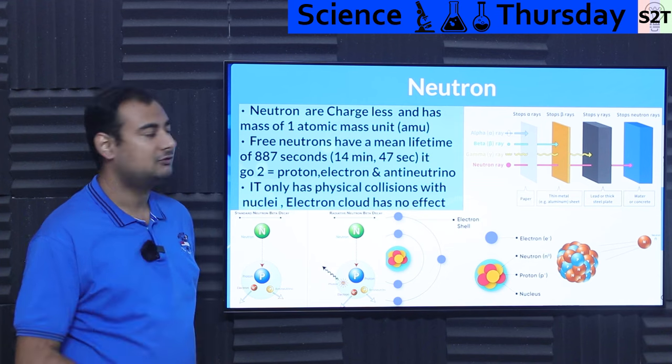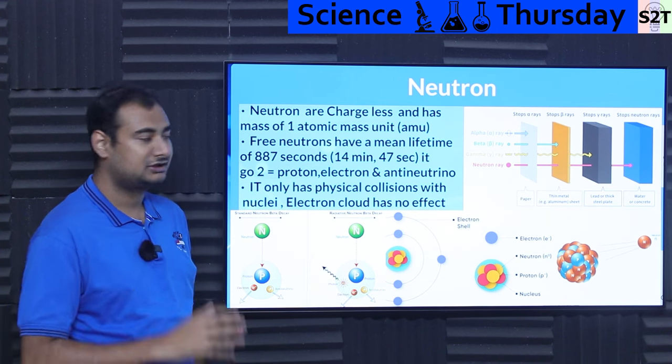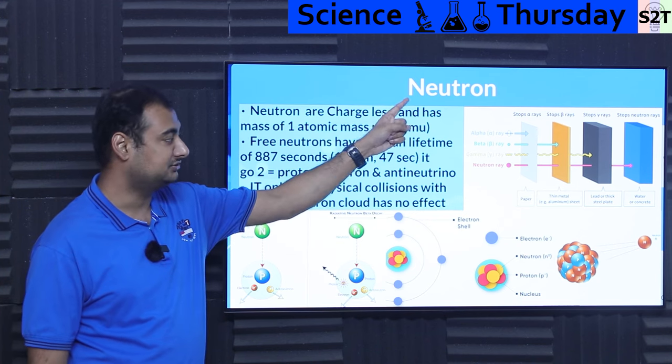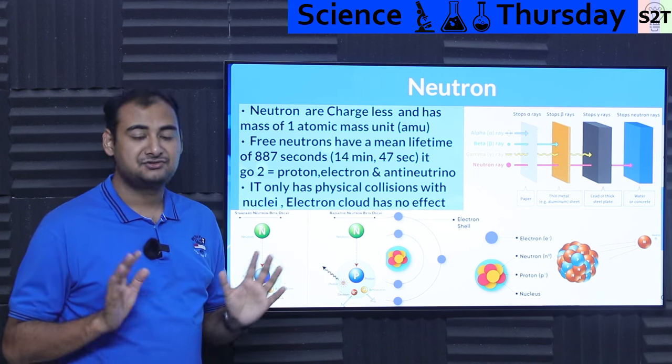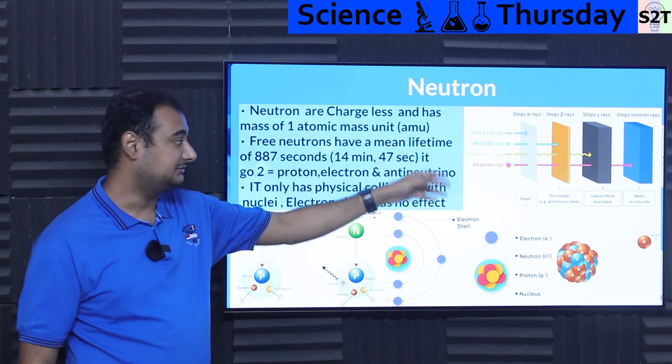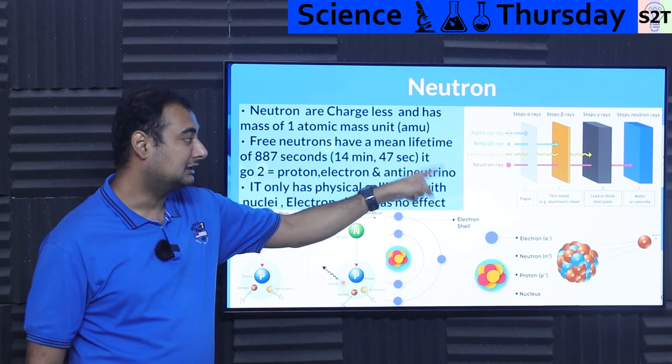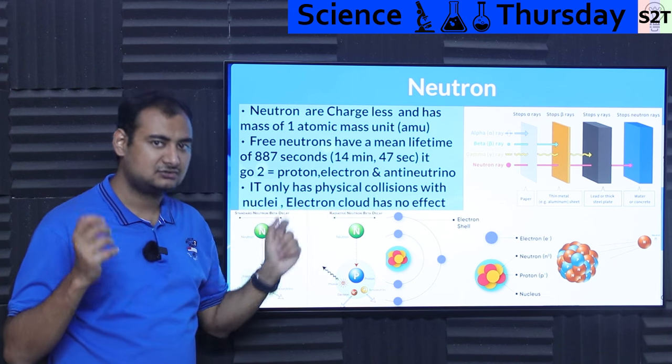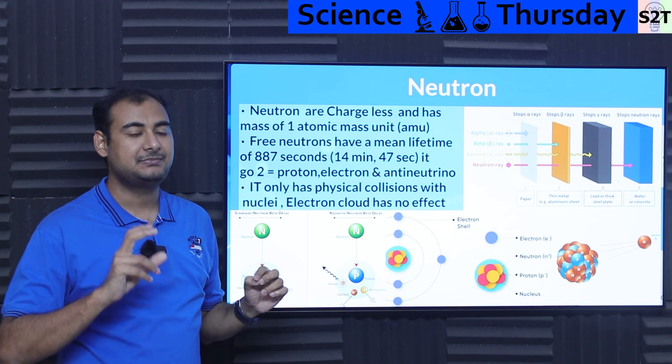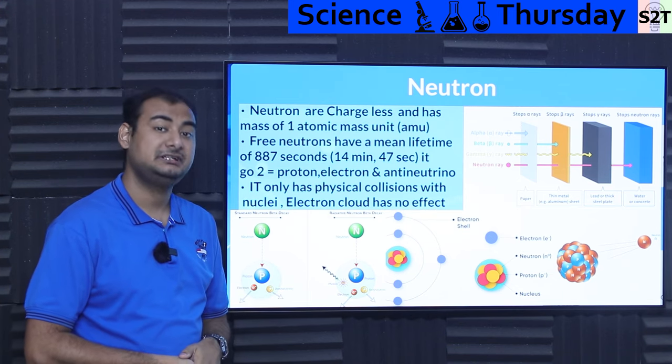Now here we are specifically focusing on neutron because alpha beta gamma is baby radiation. When we are talking about serious radiation we have to talk about neutron. Neutron are chargeless. That's the primary reason why alpha and beta shielding is so easy. They are powerful but they are charged so they interact with electron cloud quite easily. And gamma rays while they are not charged, they are energy packets. Energy packets react with electron cloud. So they are a bit difficult to stop but not impossible.